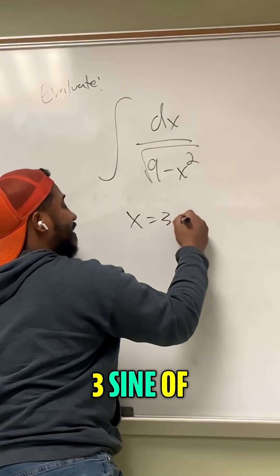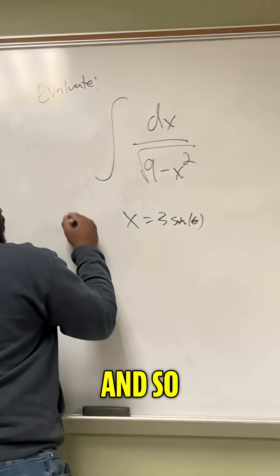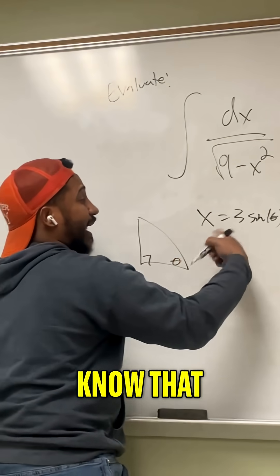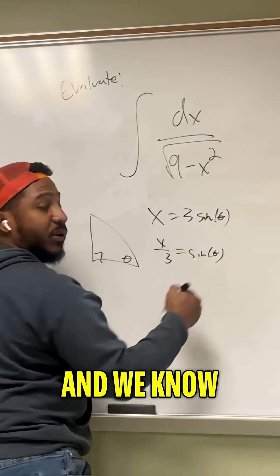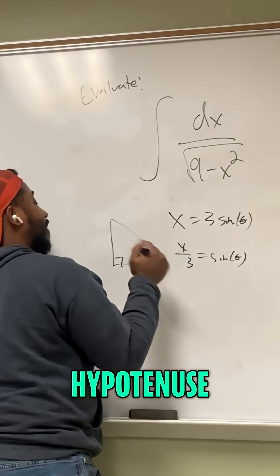This means we're going to let x equal 3 sine of theta. If this is theta, then we know that x equals 3 sine theta. That means that x over 3 equals the sine of theta. And we know from SOHCAHTOA that sine is the opposite over the hypotenuse.